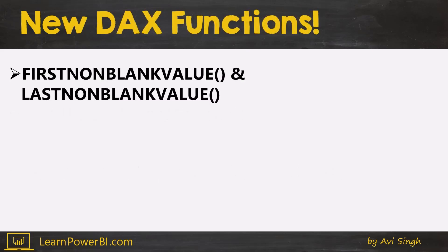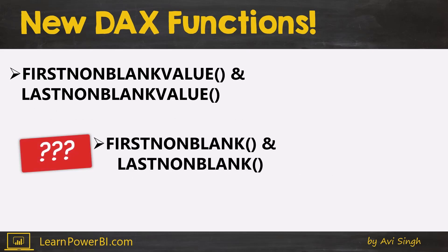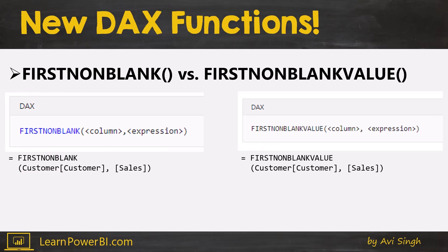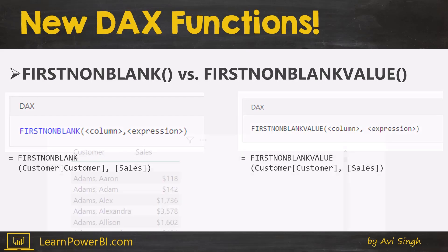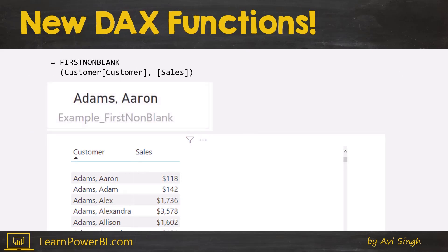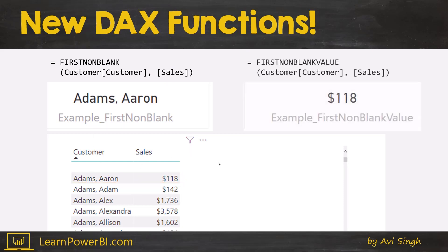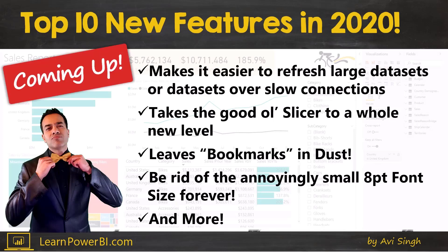The difference between FIRSTNONBLANK and FIRSTNONBLANKVALUE got me for a spin. The syntax looks similar — for example, FIRSTNONBLANK(customer column, sales) — but FIRSTNONBLANK returns the column value where the first non-blank sales value is found, whereas FIRSTNONBLANKVALUE returns the value of the measure. It gives you a lot more flexibility, and it's definitely a welcome addition.